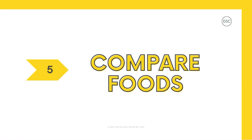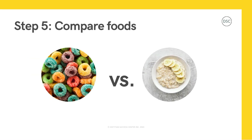Lastly, we have step number five, which is to compare foods based on our nutrition goals. Now that we know where to find information and which information we want to focus on, we can use this to compare two foods and decide which one is the better choice for us. Remember, all foods can fit in a healthy diet. Even if a food is higher in added sugar, salt, or saturated fat, we can enjoy these foods once in a while versus every day.